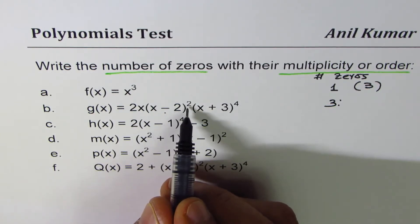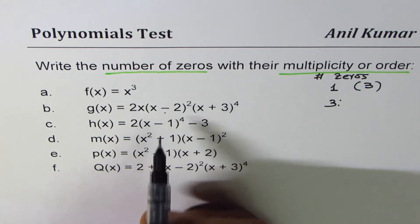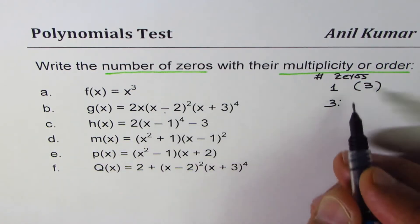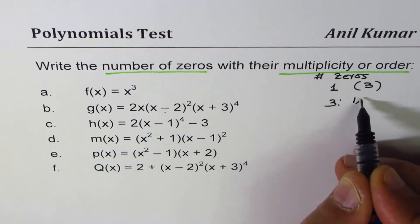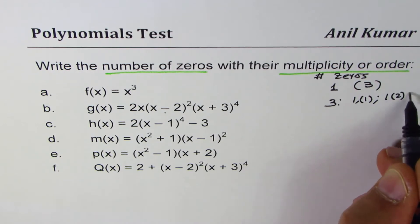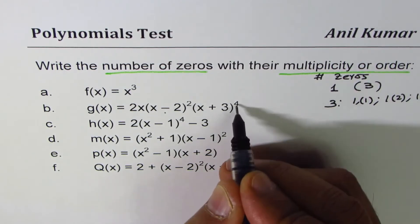And it actually goes to -3, the order is four. So let me write like this: there are three zeros, and along with order, one is linear, one we have of order two, and one we have of order four. So that power gives you the multiplicity or the order for the zero.